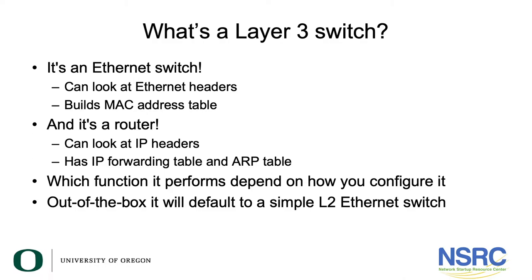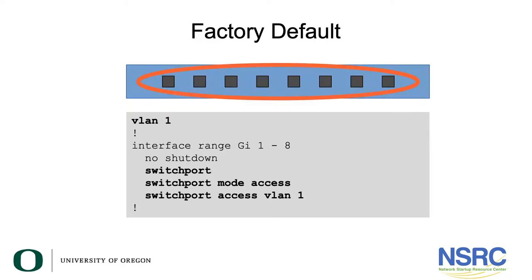Which function it performs depends on how you configure it. Out of the box, Layer 3 switches usually default to being a simple Layer 2 Ethernet switch. The example has eight ports, all existing in one VLAN — the default is usually VLAN 1. Interfaces gigabit 1 through 8 are all set up as switch ports in access mode, where end user devices connect, and they're all members of VLAN 1.